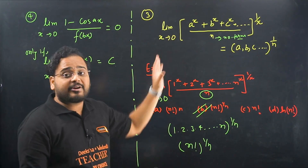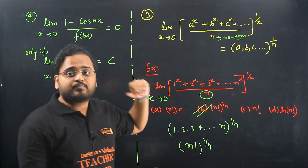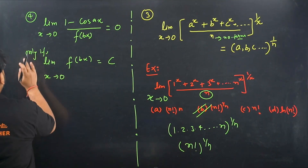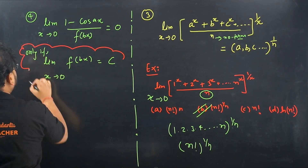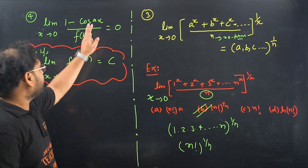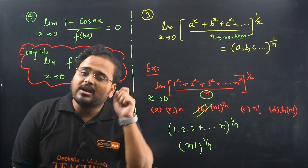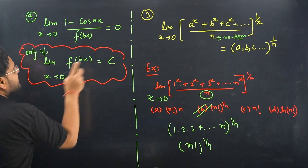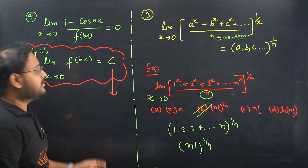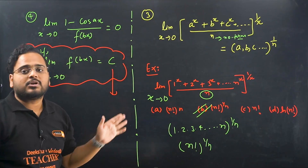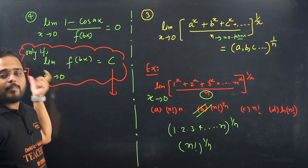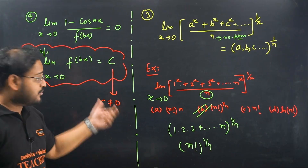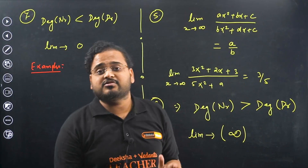Trick 4: When you have the form (1 - cos(ax) · cos(ax)) / f(bx), the condition is that f(bx) must be a non-zero value — meaning the limit of f(bx) as x→0 is a non-zero constant. Under this condition, the entire expression becomes equal to 0 directly. The denominator function cannot be zero when the limit is applied. That is Trick 4.